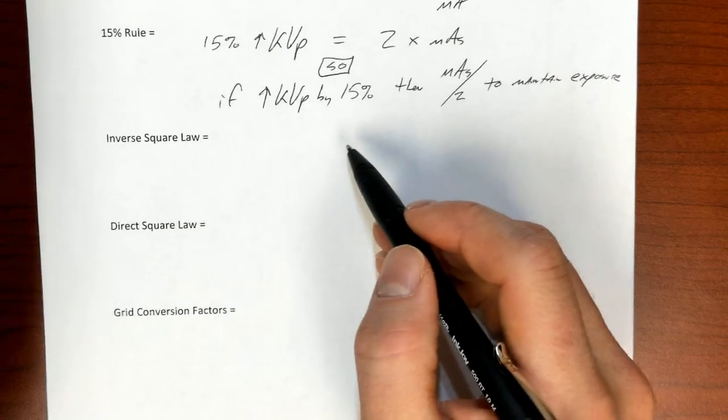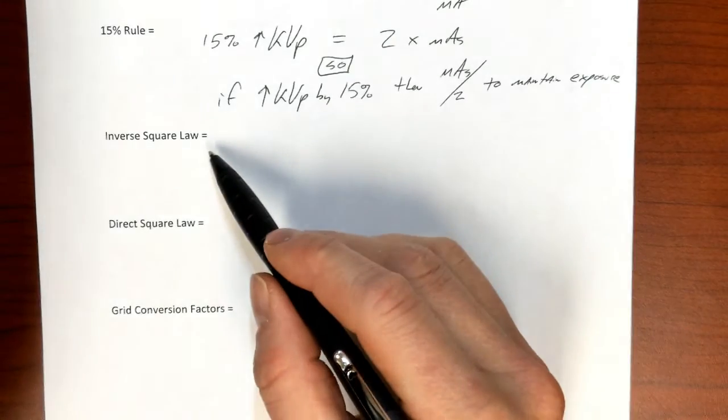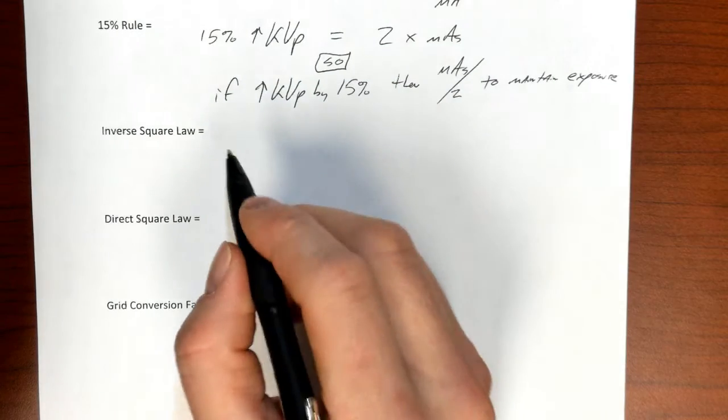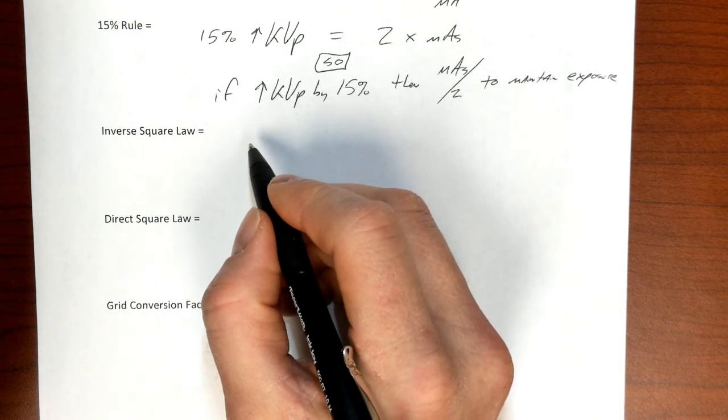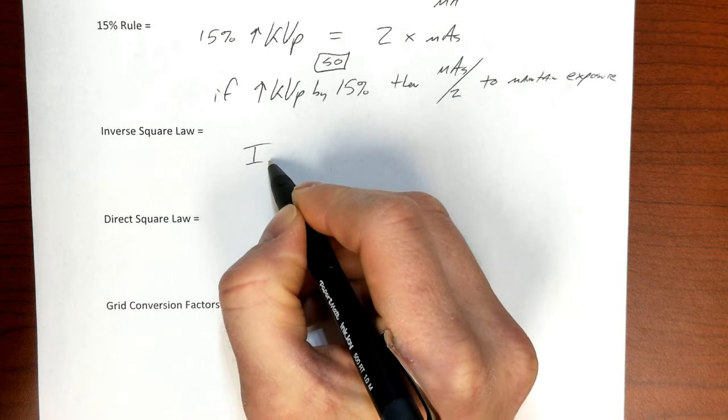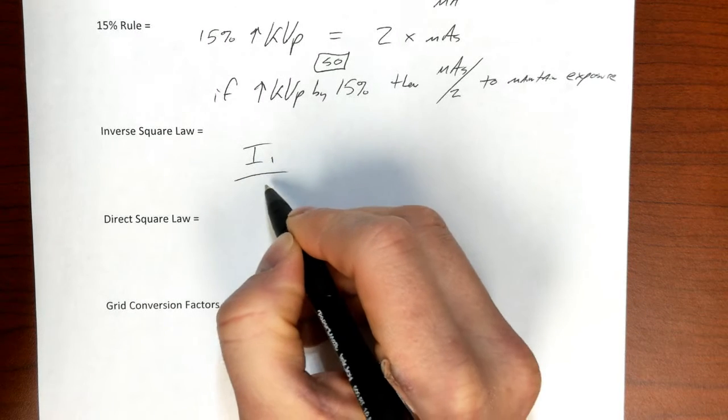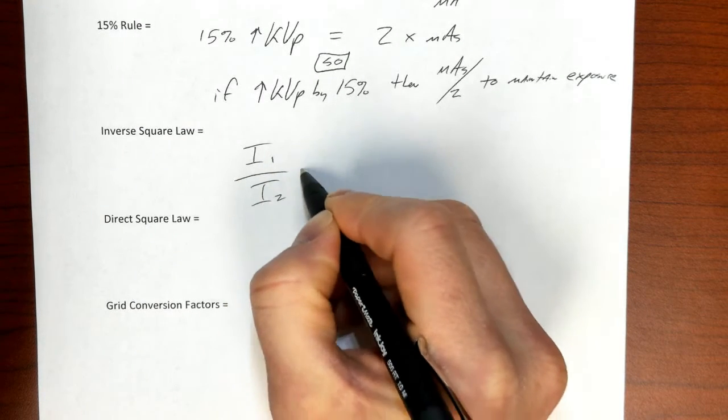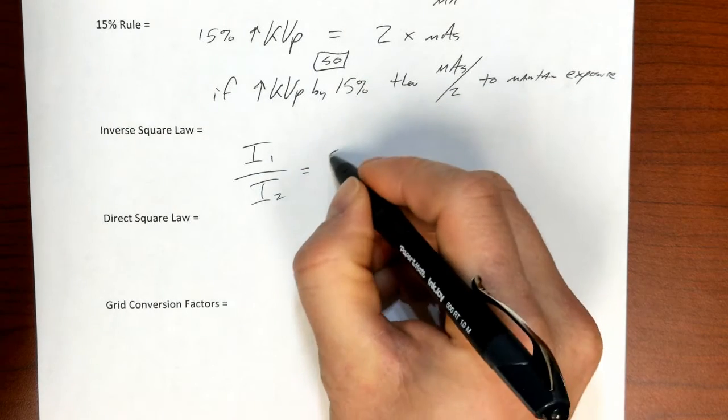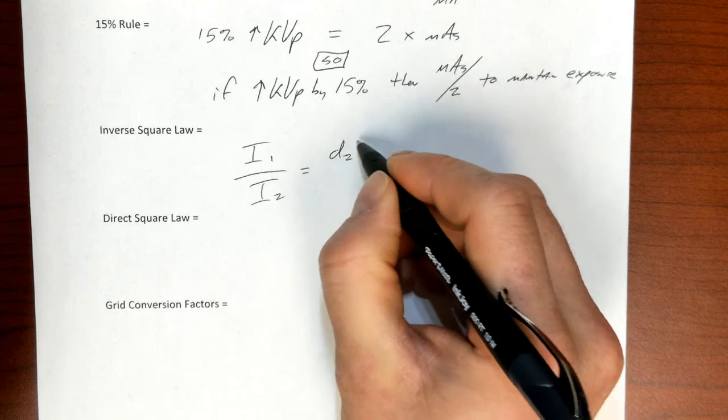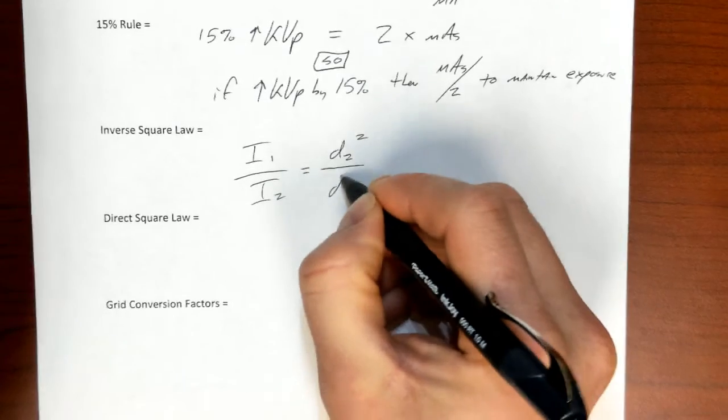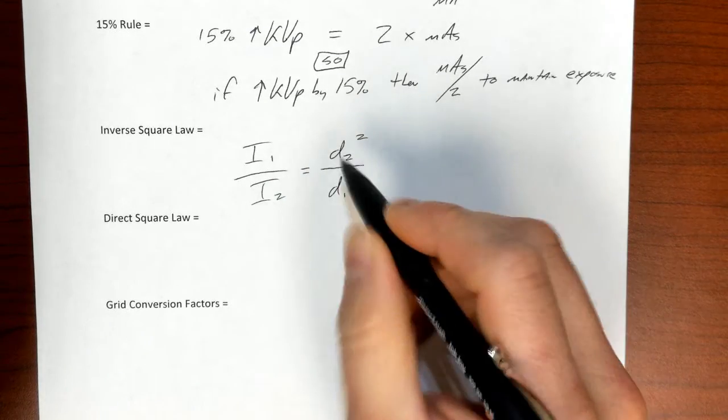Now another thing that significantly changes intensity or exposure at the image receptor is the distance from the source, particularly a point source of radiation. So we express that as intensity 1 over intensity 2, and this is the inverse square law. So we put the distance 2 squared on top and distance 1 squared on the bottom. This is why it's inverse.